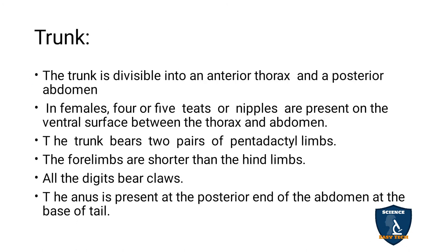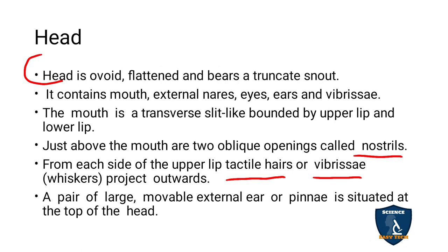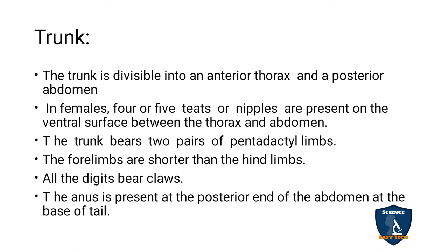The trunk is divided into anterior thorax and posterior abdomen. The anterior means the front portion — that is the thoracic region — and the posterior, or back side, is the abdomen. So the front side is the thorax and the back side is the abdomen.